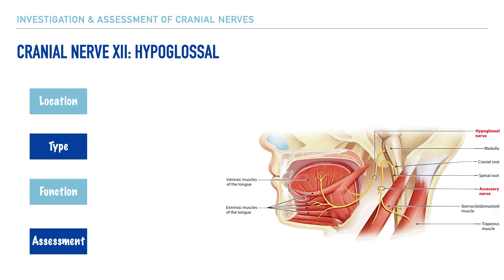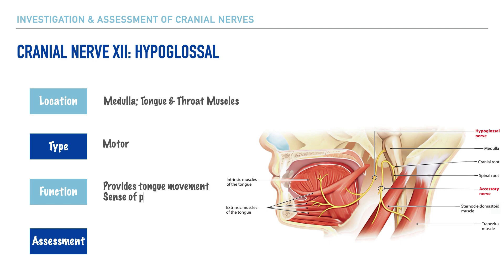And in terms of its location, we'd find its nerve fibers traveling from the medulla to the tongue and throat muscles. And as it pertains to its type, we'd say that it's motor. And this is because of its function, which is to provide tongue movement along with a sense of proprioception.